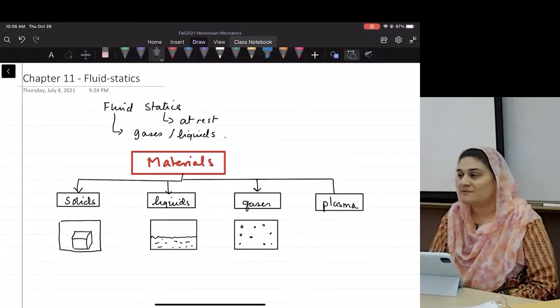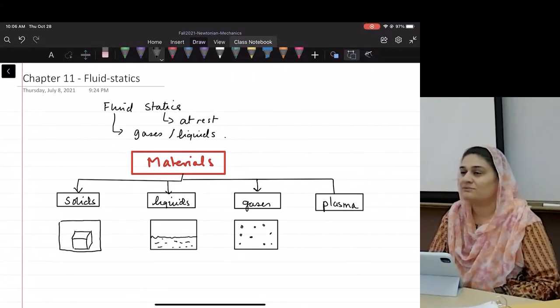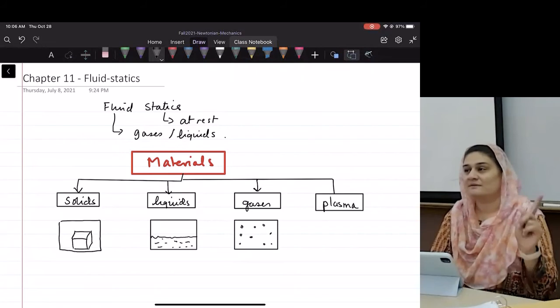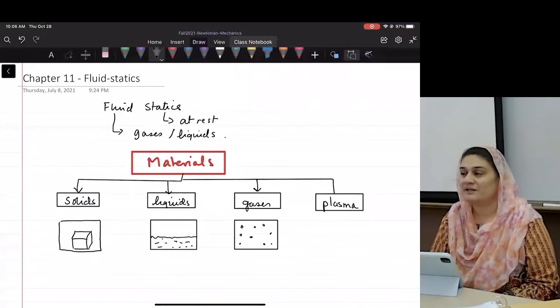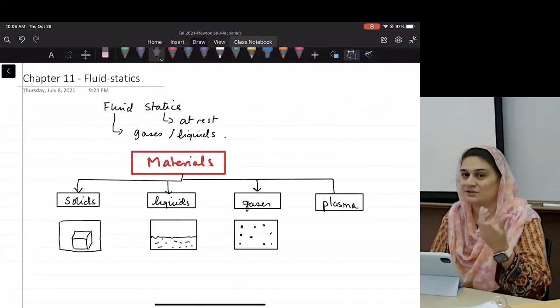Plasma, the rest of the universe has. We don't, so we're not going to talk about that. But in the rest of the universe, this is the most commonly found thing, because that's what the stars have.